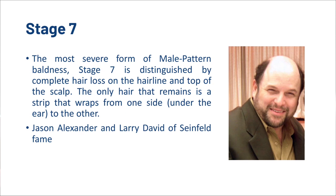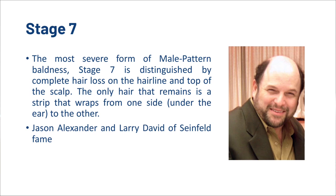And finally, stage 7 — the most severe form of male pattern baldness — is distinguished by complete hair loss on the hairline and top of the scalp. The only hair that remains is a strip that wraps from one side under the ear to the other. Two examples are Jason Alexander and Larry David of Seinfeld.